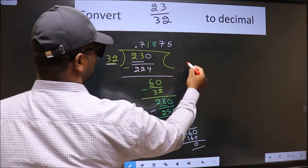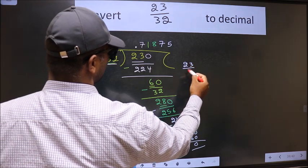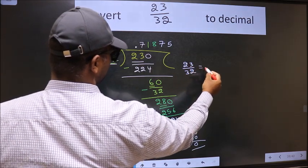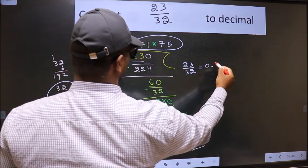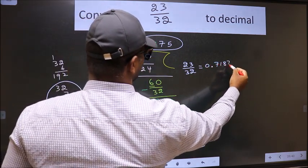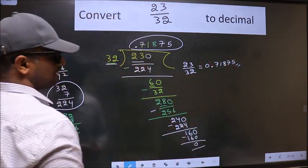Therefore, decimal of 23 by 32 is this one. So 0.71875 is our answer.